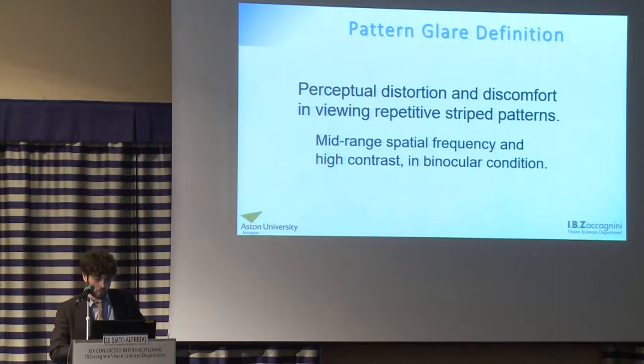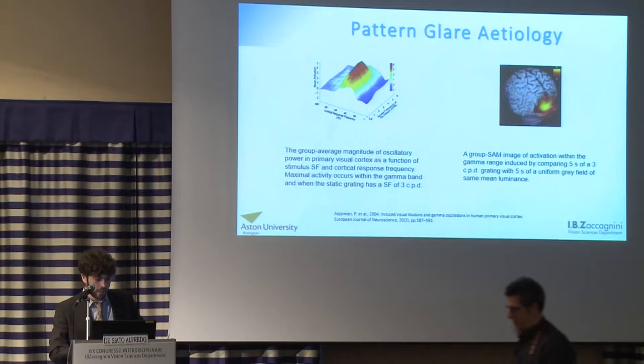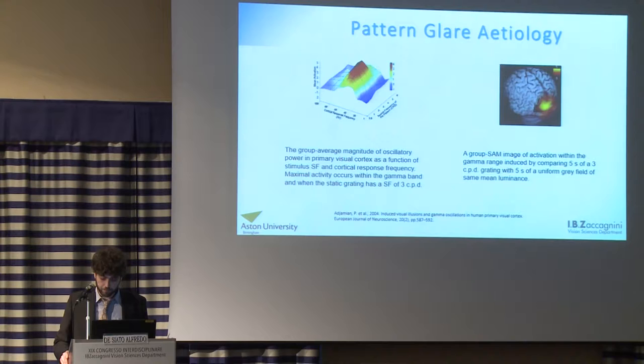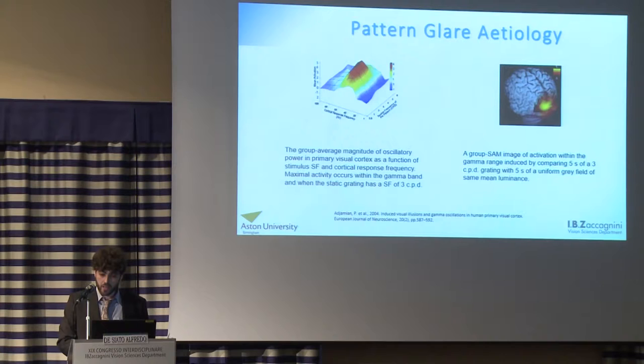So what is behind pattern glare? There is a strange and unusual activation of the primary visual cortex when viewing this kind of image, particularly for images of spatial frequency of around three cycles per degree. We know we are already more sensitive to that kind of grating, but in pattern glare this sensitivity becomes susceptibility. We see a strange, abnormal response that has been identified as cortical hyperexcitability.